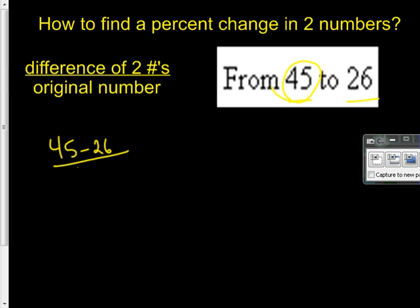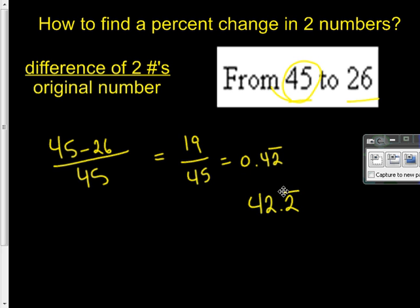The original number in this case is 45. 45 minus 26 is 19. 19 divided by 45 will get you a decimal of 0.42 repeating. So basically, to make this into a percent, it would be 42.2 percent.